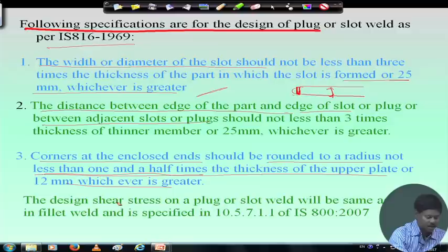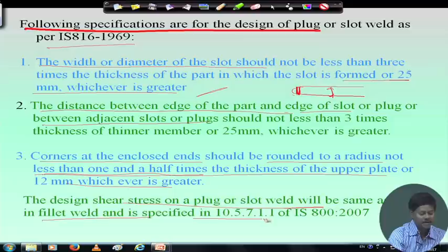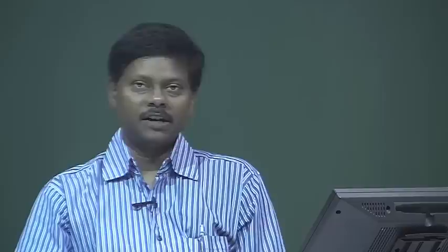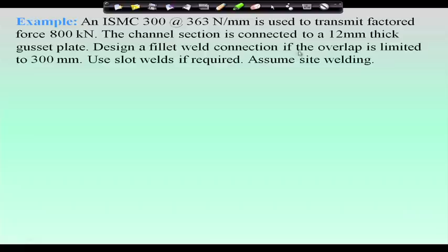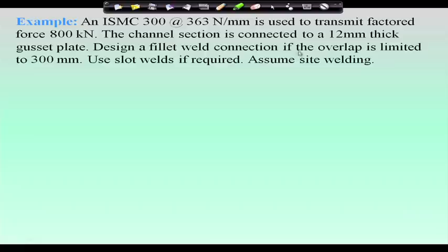These three points we must keep in mind. The design stress on a plug or slot weld will be the same as that in a fillet weld, as specified in clause 10.5.7.1.1 of IS 800:2007. The design criteria are the same as for a fillet weld — the only difference is that because of limited distance, we introduce some slots so that the additional length can be accommodated. We will now go through an example to understand how to design a slot weld using the codal provisions discussed.